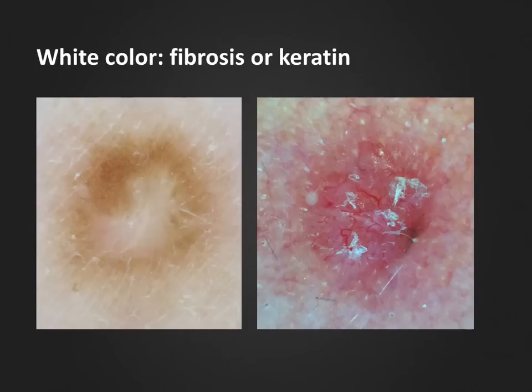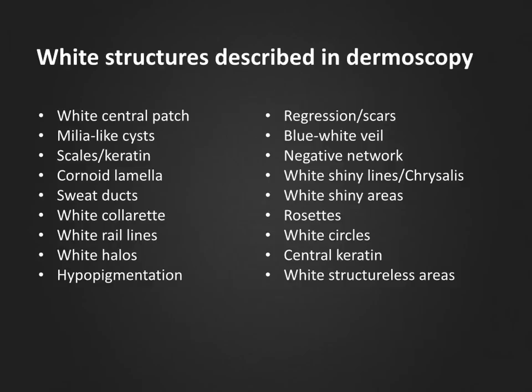We can see white color due to fibrosis in the typical central white patch of a dermatofibroma, as seen in the picture on the left, or we can see white scales on the surface of a basal cell carcinoma on the right. It is important to observe that the mere presence of white color due to fibrosis or keratin is not diagnostic by itself. It is rather the combination of white color with other local structures that provides the diagnosis. In the dermatofibroma, the central patch is surrounded by a light brown pigment network in the periphery. In basal cell carcinoma, the white scales are not particularly expected, but the presence of typical branched vessels points us in the right direction.